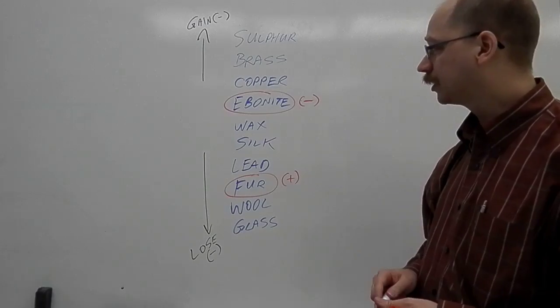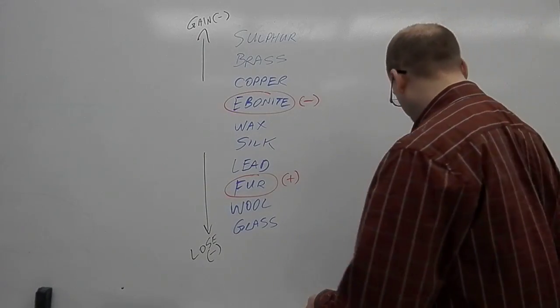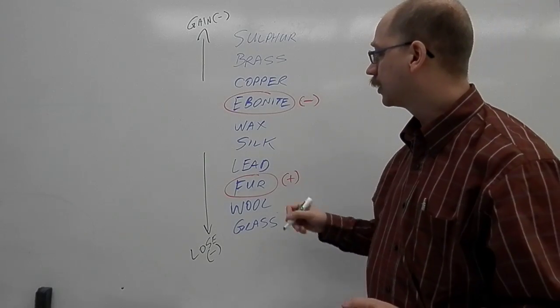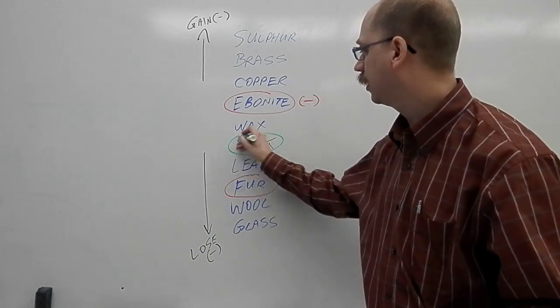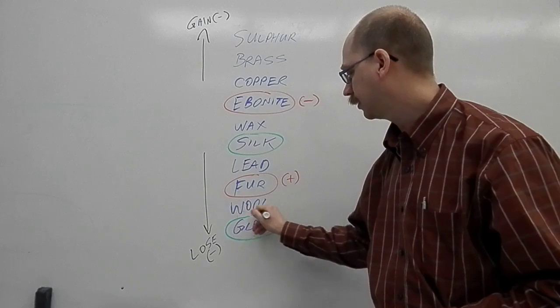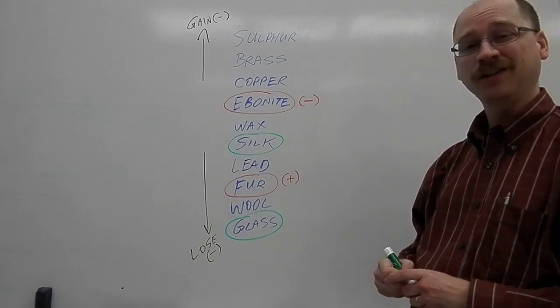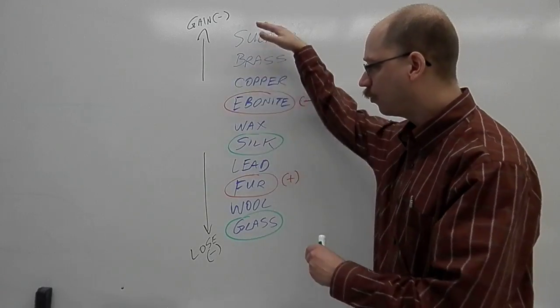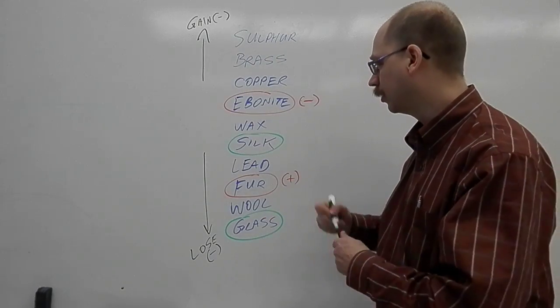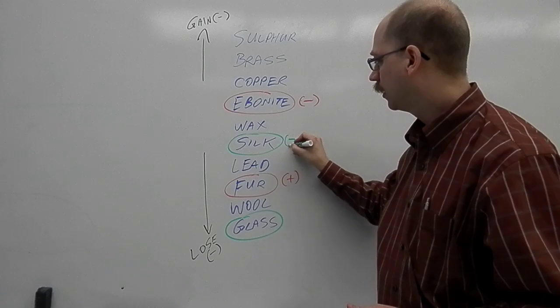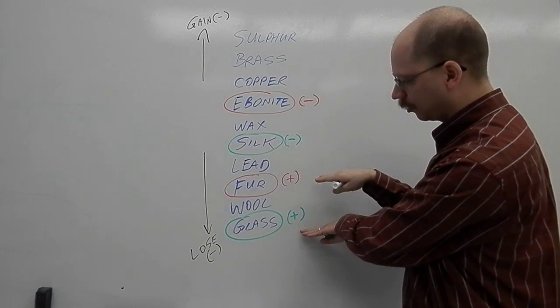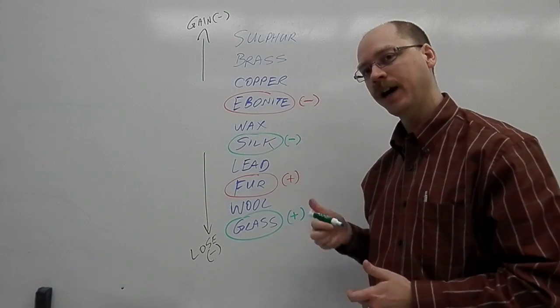You could look at some other examples then, try to spot them. I notice that we do have silk here and glass down here. That still continues to follow the right pattern, right? The ones that are higher up, anywhere higher up relative to the other material, the silk is going to be negative while the glass is positive. Things closer to the bottom positive, things higher up negative.